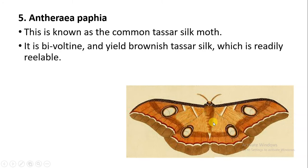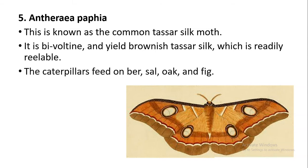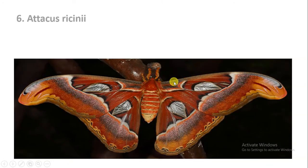The next species is Antheraea paphia, also called the common Tassar silk moth. It is bivoltine, meaning it produces two generations in a year. It yields brownish Tassar silk, and the caterpillar feeds on the leaves of plants like Ber, Sal, Oak, and Fig.